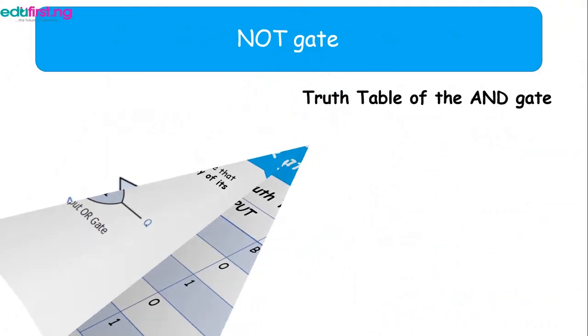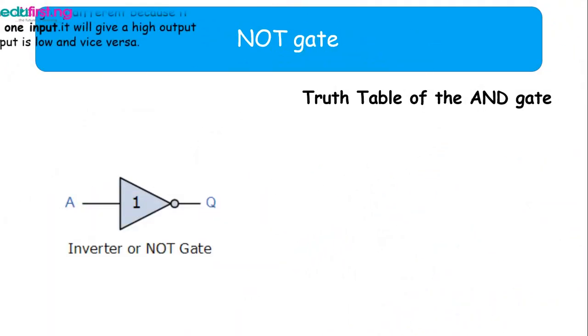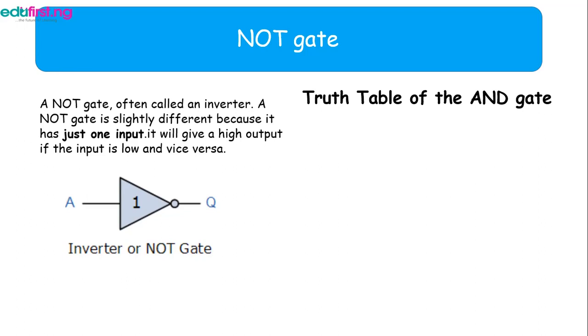Then for the NOT gate, it's also called an inverter. It's different. The difference is that it has just one input and also one output.